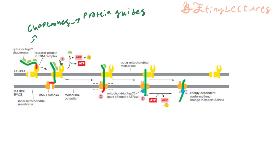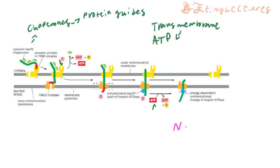For the mitochondrial chaperones to properly grip the protein, they undergo a conformational change requiring one ATP per chaperone. Transmembrane transport therefore requires ATP as its energy currency. This is an important distinction from gated transport, which uses GTP. People are often tested on which energy — GTP or ATP — is used for which transport system.